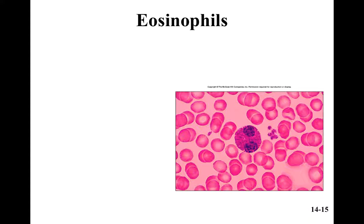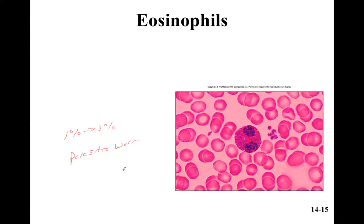Eosinophils generally have a bilobed nucleus — two lobes, sometimes connected. Eosinophils make up one to three percent of our leukocytes. Their biggest role is to defend against parasitic worm infestations, and they also help to moderate allergic reactions.